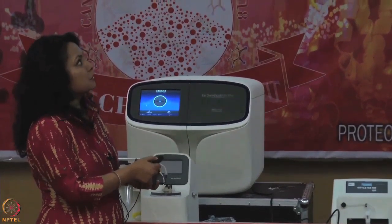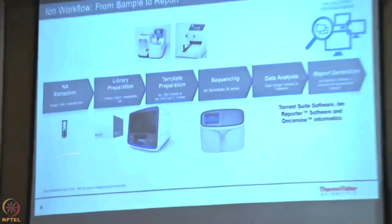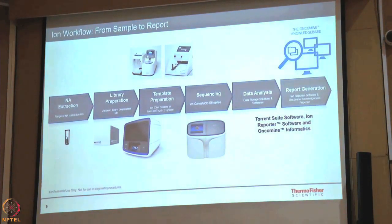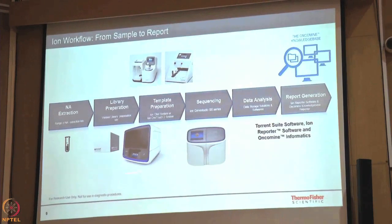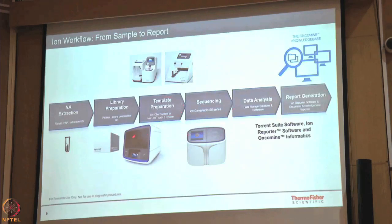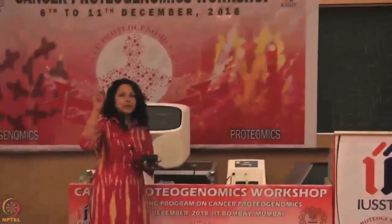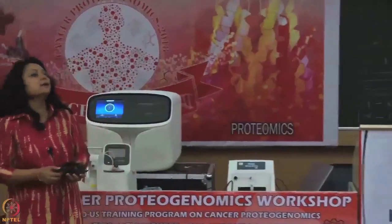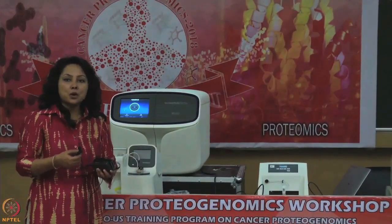We have two solutions: the semi-automated way presented here and a fully automated way using the Ion Chef, for which we have a video to show. The Ion Chef serves two purposes: it can prepare libraries and perform all amplification onto the ion spheres, giving you ready-to-load chips. These chips are silicon wafers with millions of wells, enabling millions of fragments to be sequenced all at once.